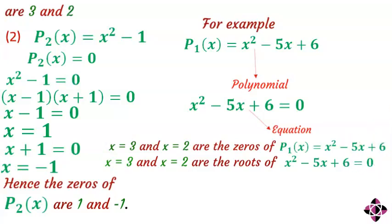In general, a polynomial of degree n has n zeros, while an equation of the nth degree will also have n roots.